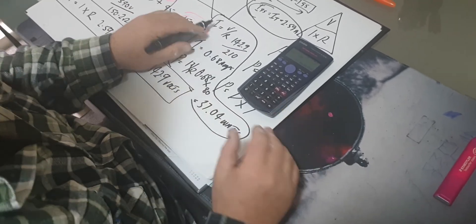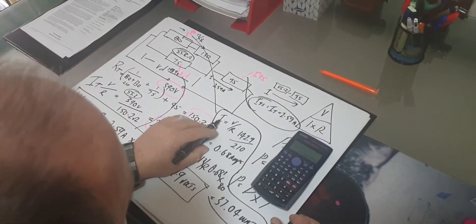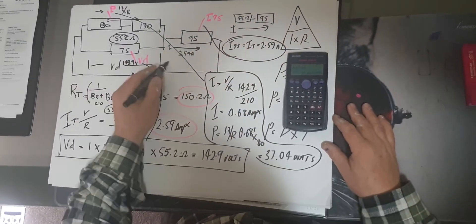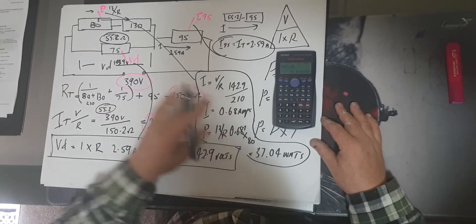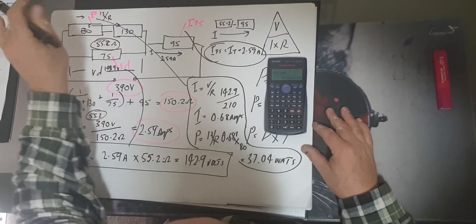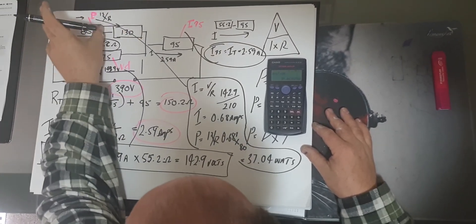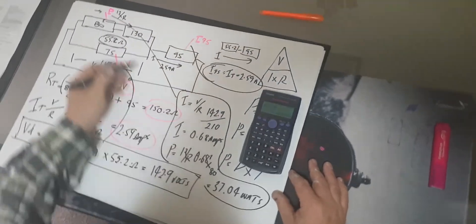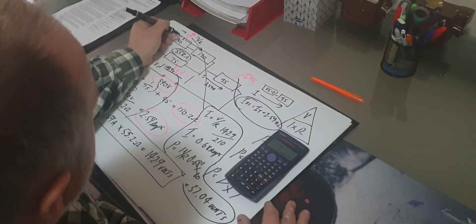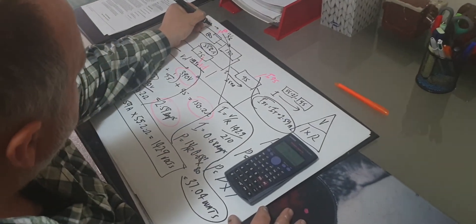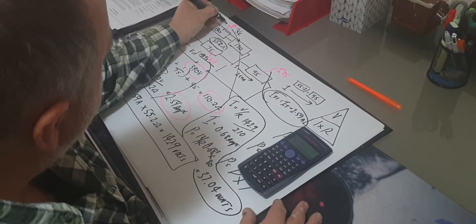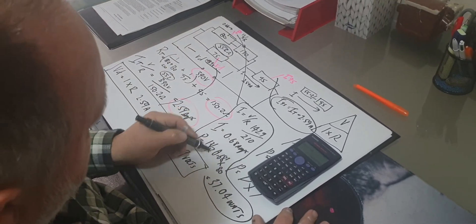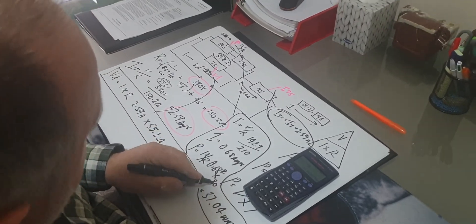We did the current first. So have a look, we did the current, we found the current going through there. I equals V over R, so I did the 142.9, which is the voltage drop across those two resistors. Then I got the two resistors added together because the voltage drop is across those two, not across the 80, across the two. So I then did 210, which is the two added together, gave me 0.68 amps. So we know that 0.68 was flowing through the two of these resistors. I squared times R, so 0.68 squared, which we did here, times the 80, because that's what we were finding, gave me 37.4 watts.